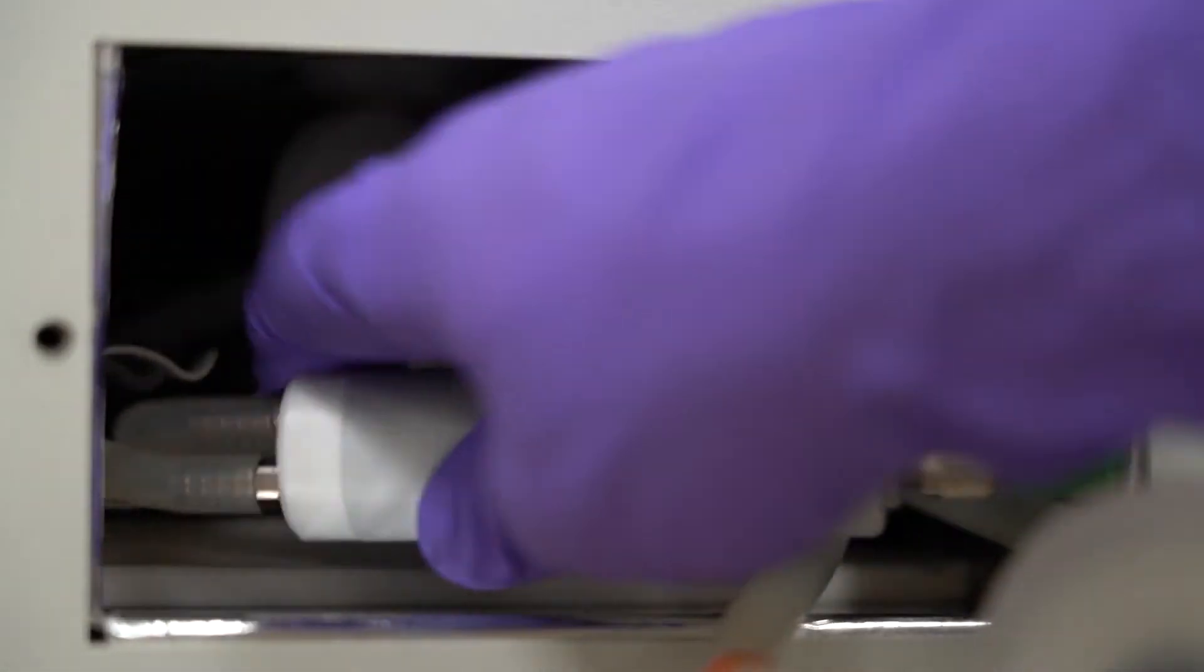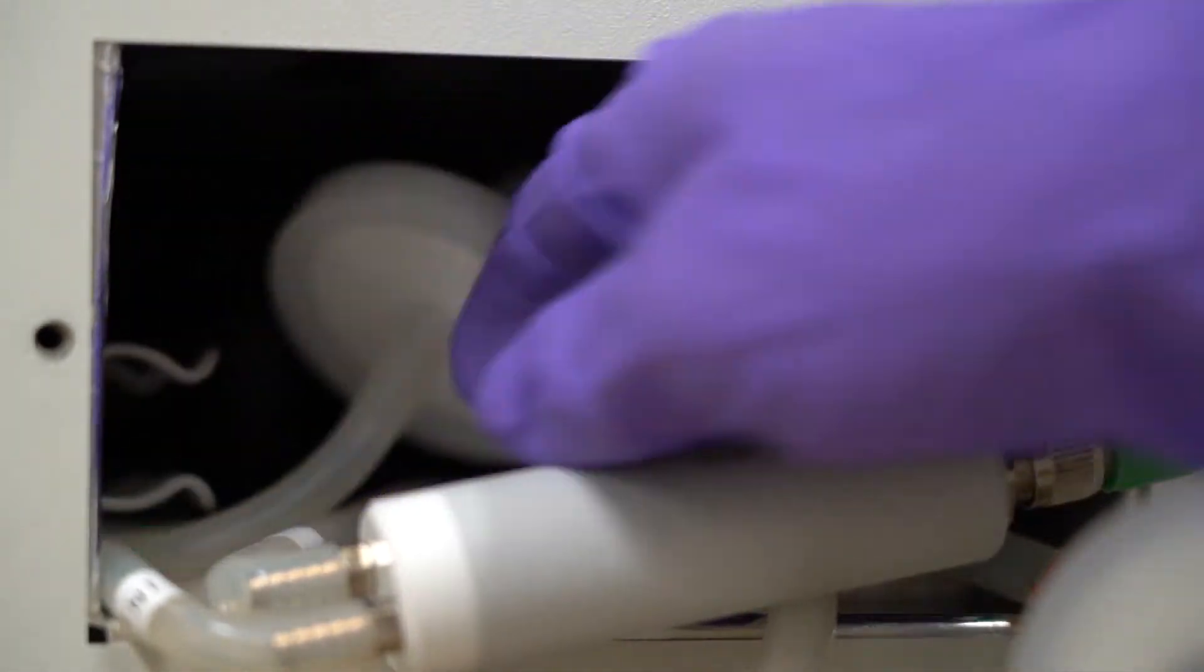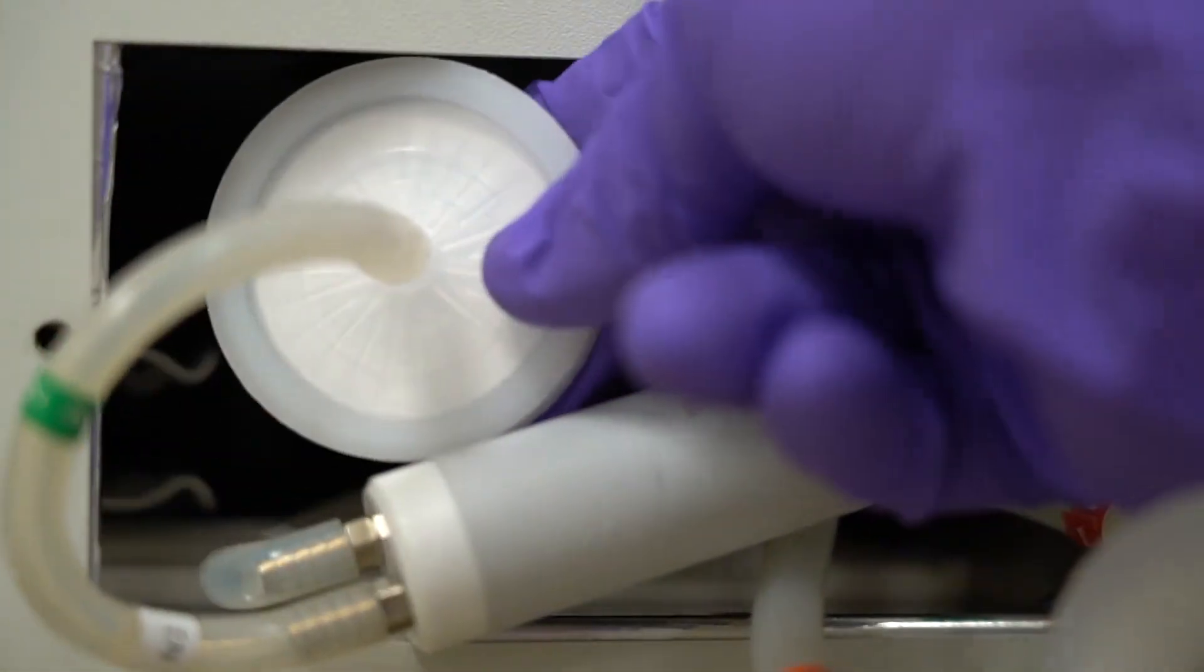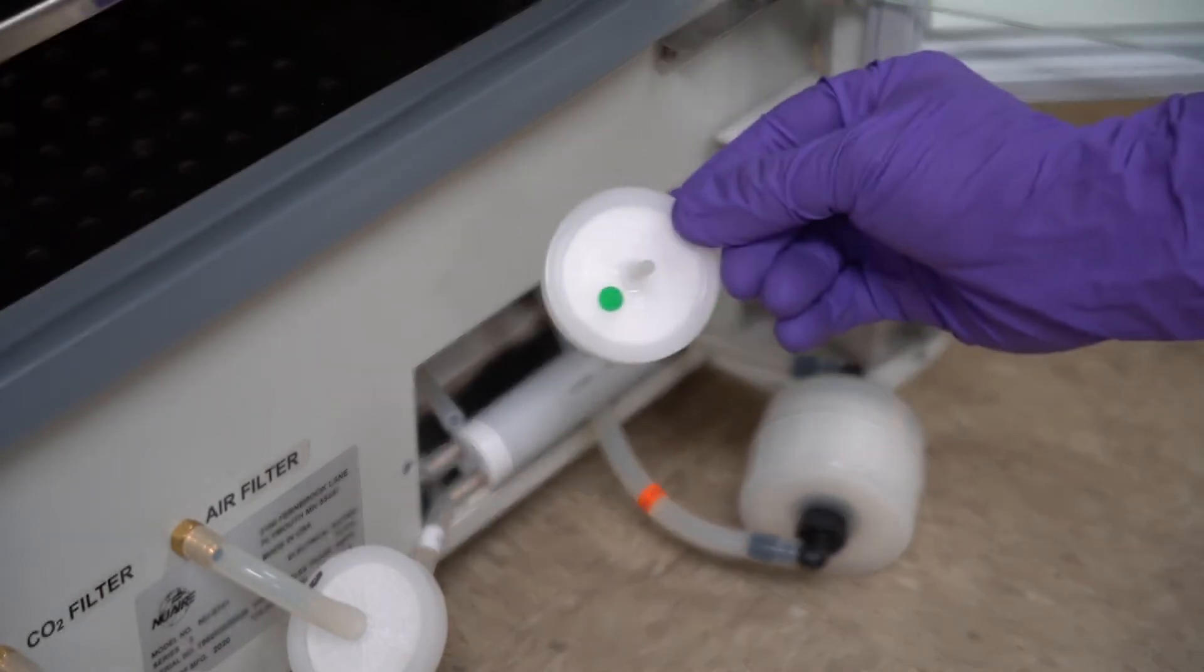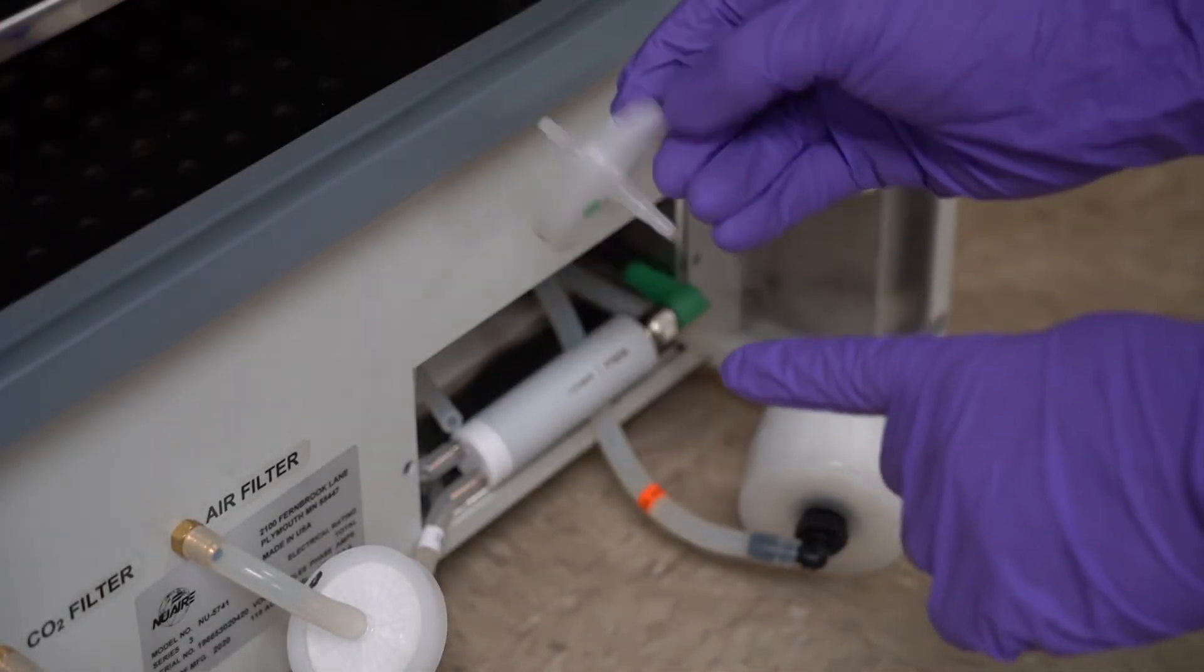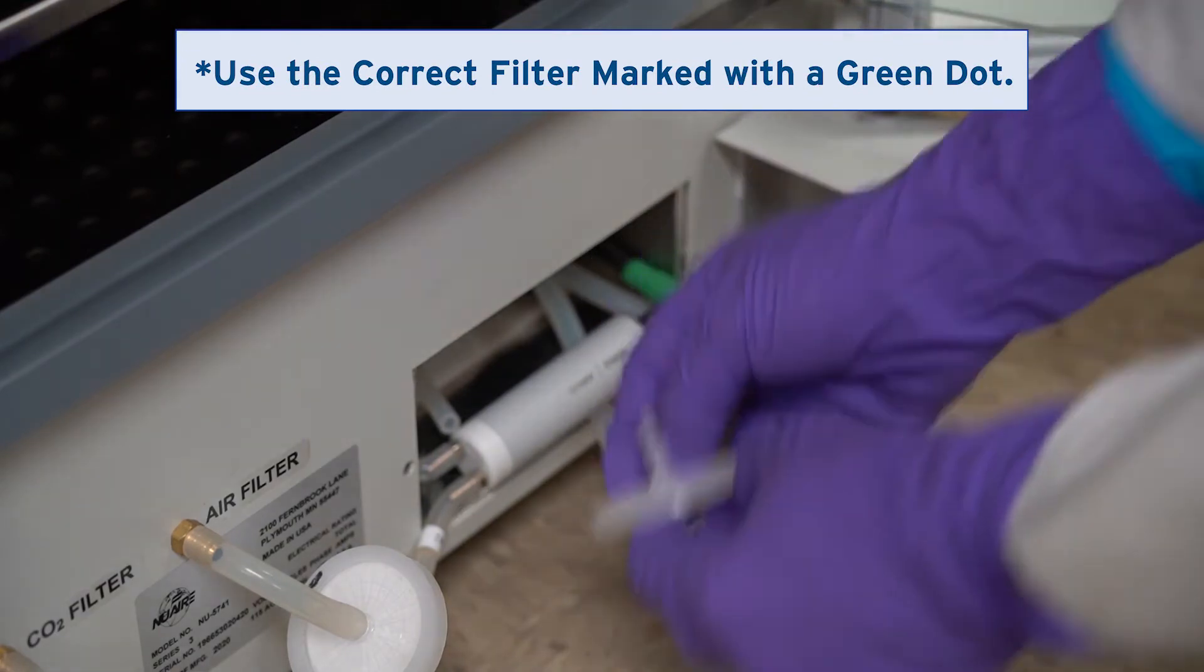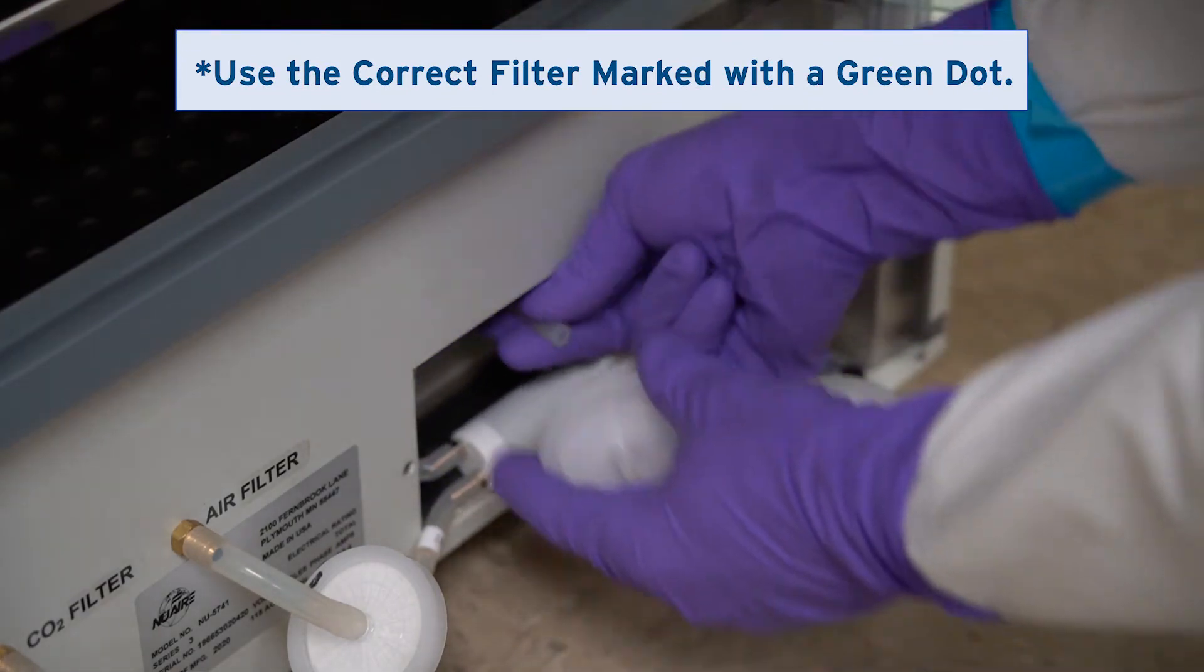Inspect the CO2 sensor disc filter and change it as needed. If necessary, remove the old filter from the tubing and connect a new one. Be sure to install a wet disc filter marked with the green dot and connect it with the correct orientation.